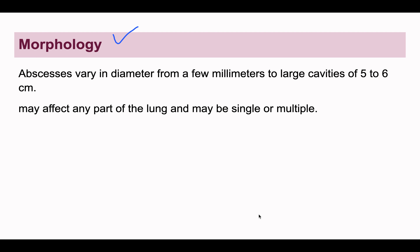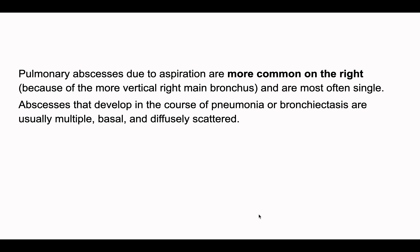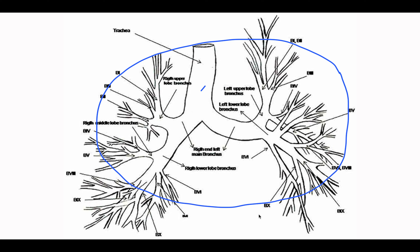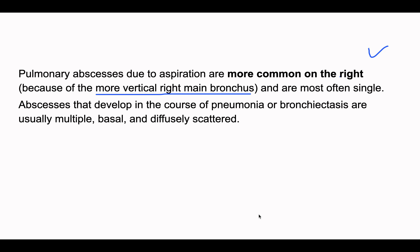The morphology of lung abscess varies in diameter — it can be a few millimeters to as large as cavities ranging from 5 to 6 centimeters, and can be either single or multiple depending on the etiology. Lung abscesses are more common on the right side of the lung because the right main bronchus is more vertical than the left. Abscesses due to aspiration are mostly single, while those superimposed on pneumonia or bronchiectasis are mostly multiple, basally located, and diffusely scattered.